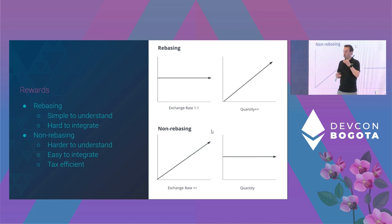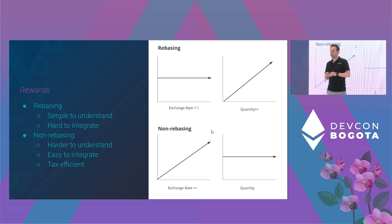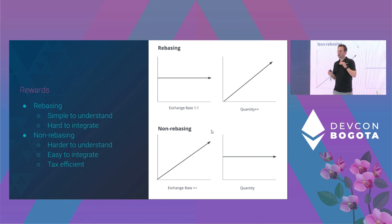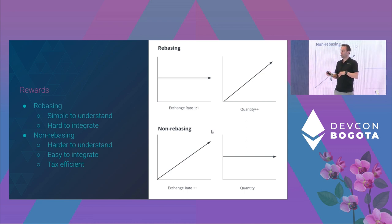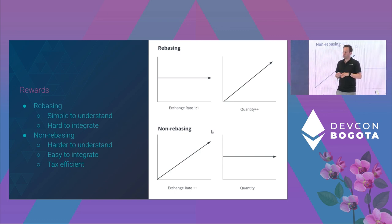With a non-rebasing token, the exchange rate increases but the quantity stays constant. The actual token increases in value over time. There are definitely pros and cons to each of these approaches.